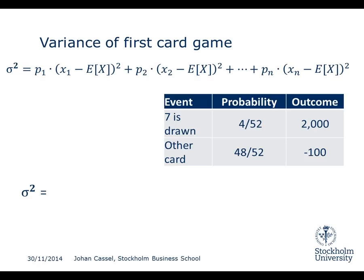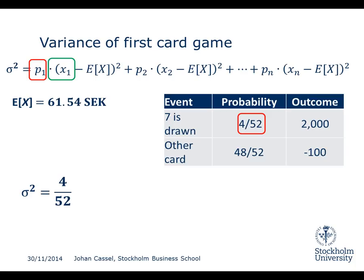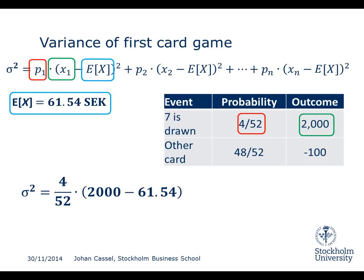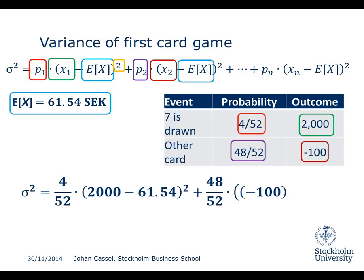Let's compute the variance of the first card game. The expected value was 61.54, and we need that in the formula. We start with the probability of event 1 — that a 7 is drawn — which is 4 divided by 52. We multiply it by the outcome of event 1, which is 2,000, minus the expected value of 61.54, and then square that parenthesis. Then we add the probability of event 2, which is 48 divided by 52, multiplied by the outcome minus 100, minus the expected value 61.54, and again square that parenthesis.